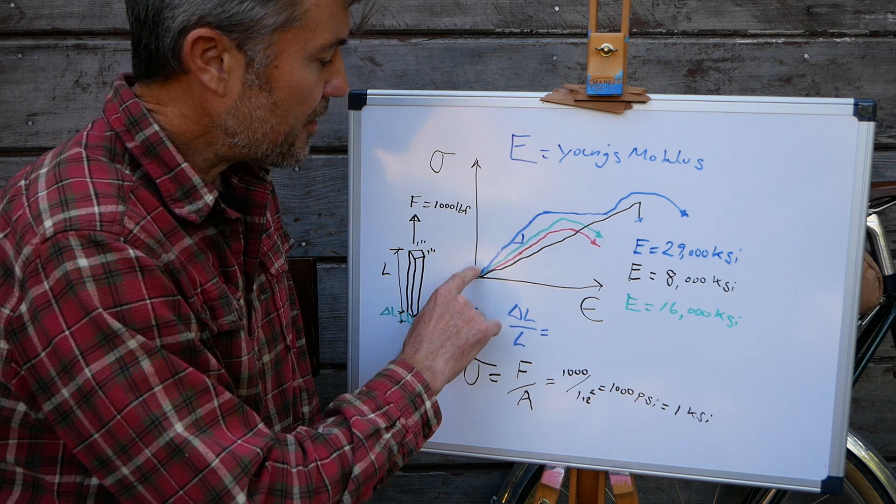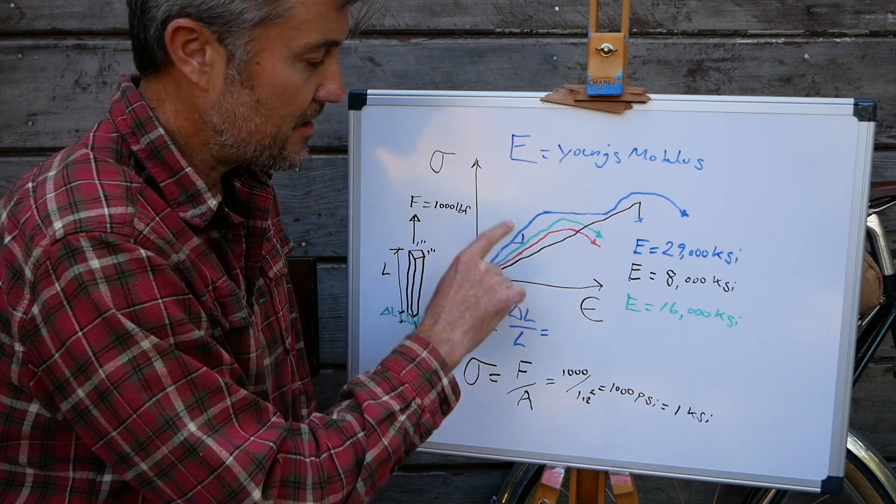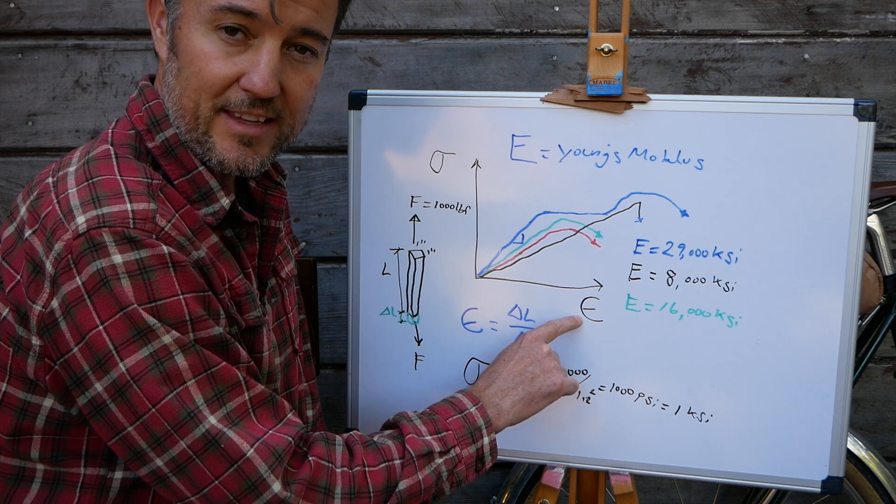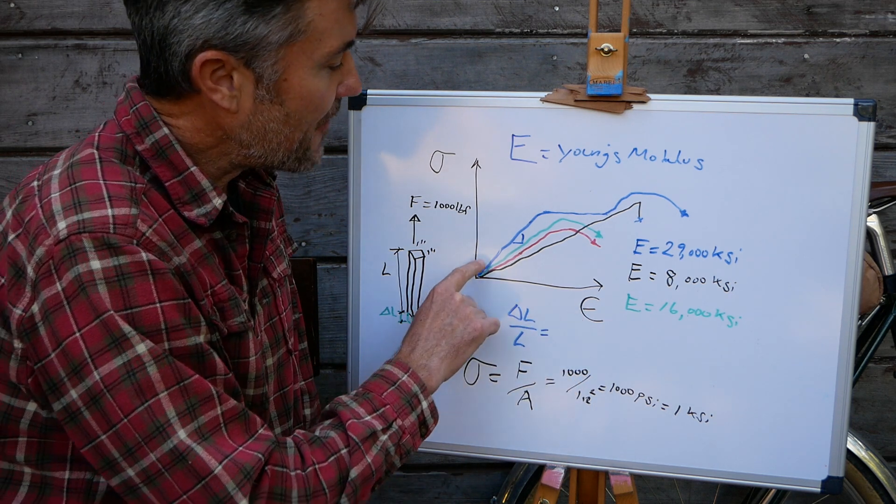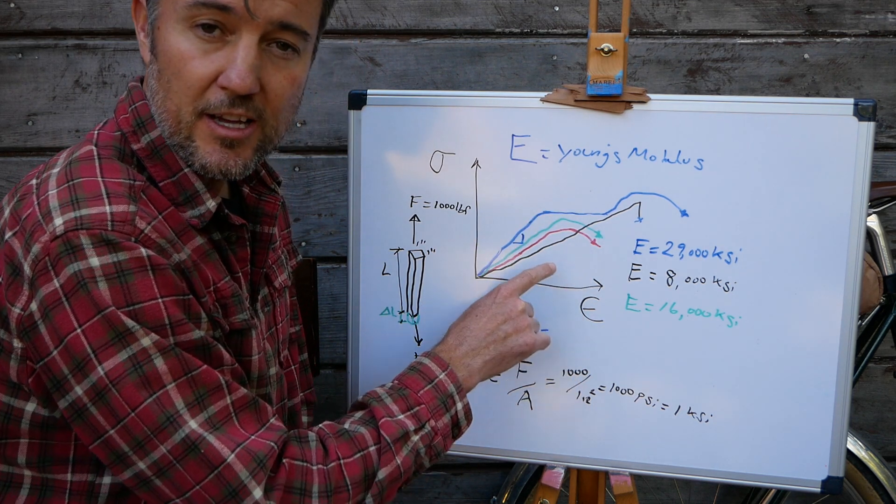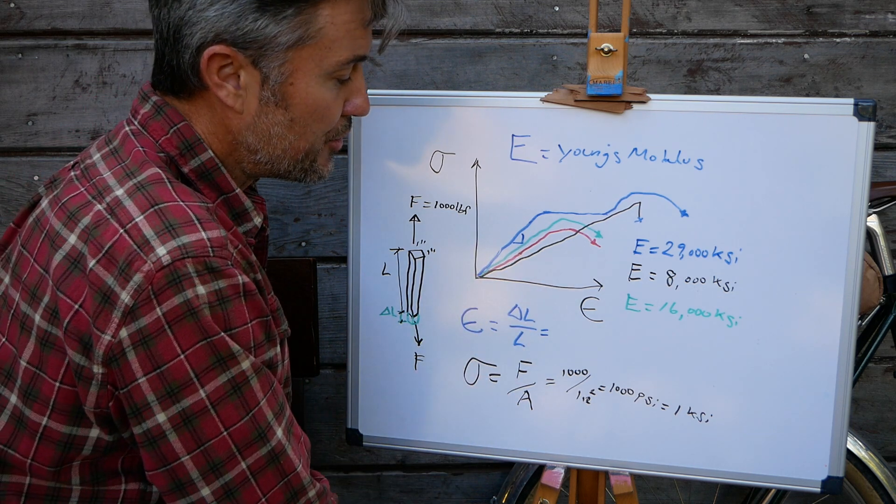So over here on our diagram, I have stress on the y-axis and I have strain on the x-axis and I have a couple of different curves in different colors. So up here in blue, we have steel.